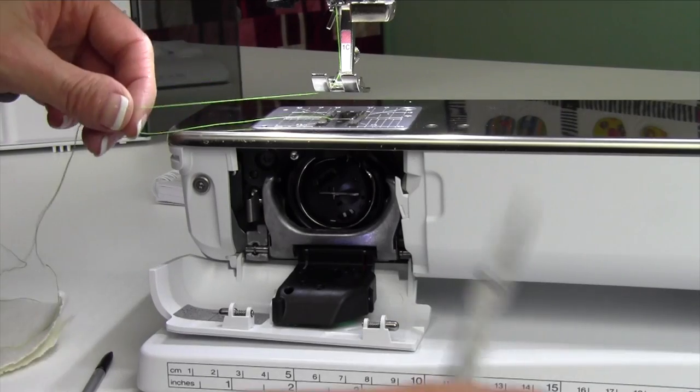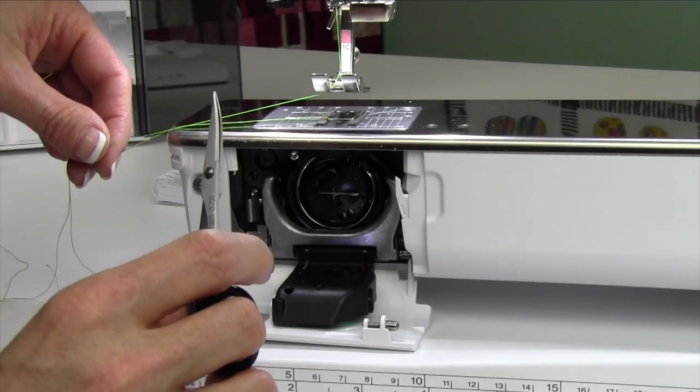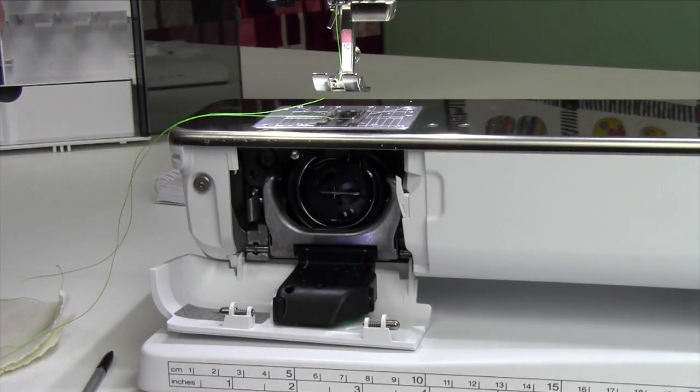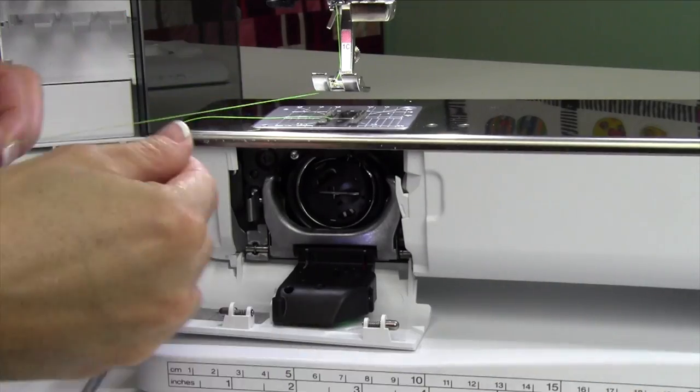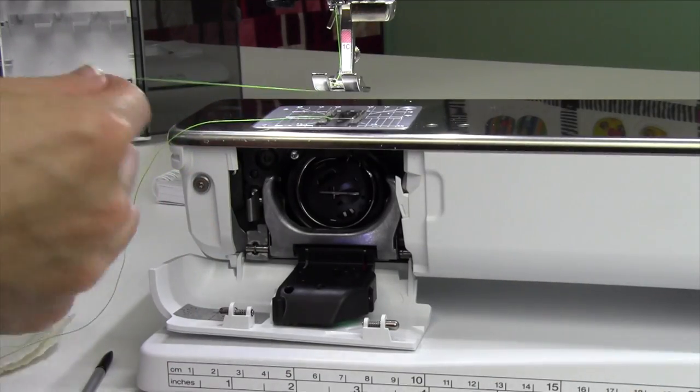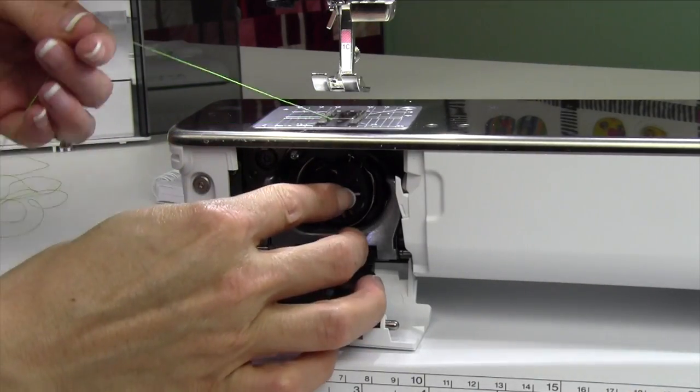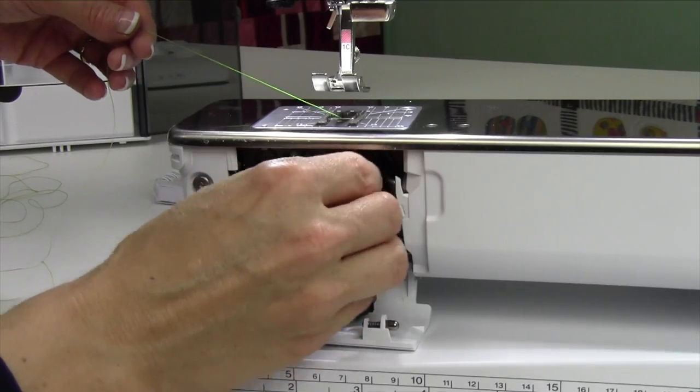First thing I'm going to do is take my scissors, and up at the top of my spool, I'm going to cut the thread and pull the thread out all the way. Then I'm also going to take the bobbin out so we can set that aside.